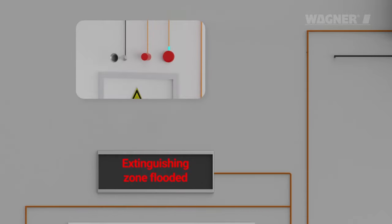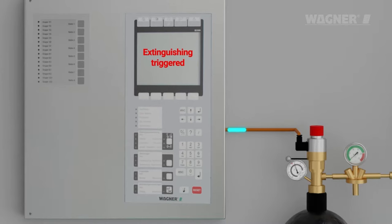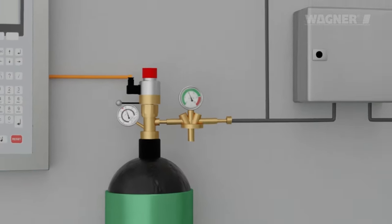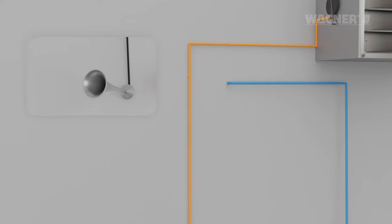The imminent start of fire extinguishing measures is indicated on the display panel and by a flashing light. The extinguishing control panel now initiates the extinguishing process. Pilot gas from the pilot gas container is forwarded to the pneumatic alarm and triggers it.